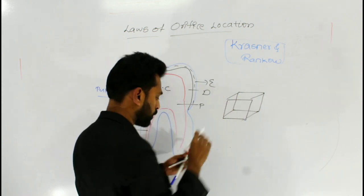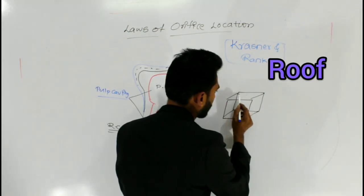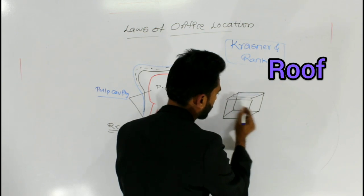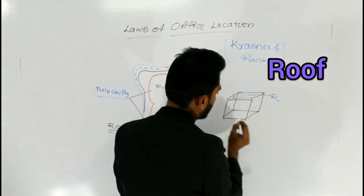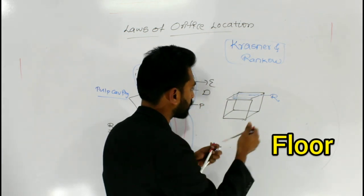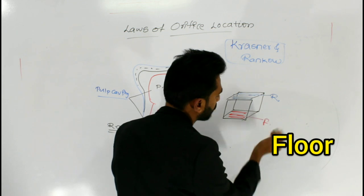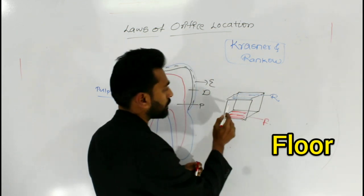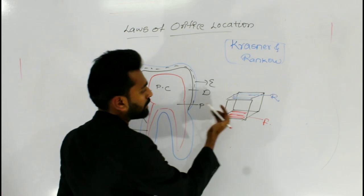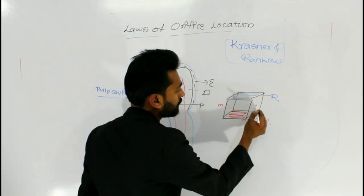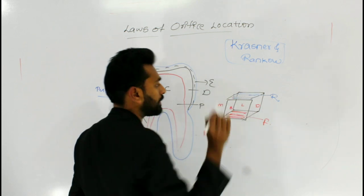Imagine this cube as the pulp chamber. It has a roof and a floor. These are the four different walls of the pulp chamber: mesial, distal, buccal, and lingual.